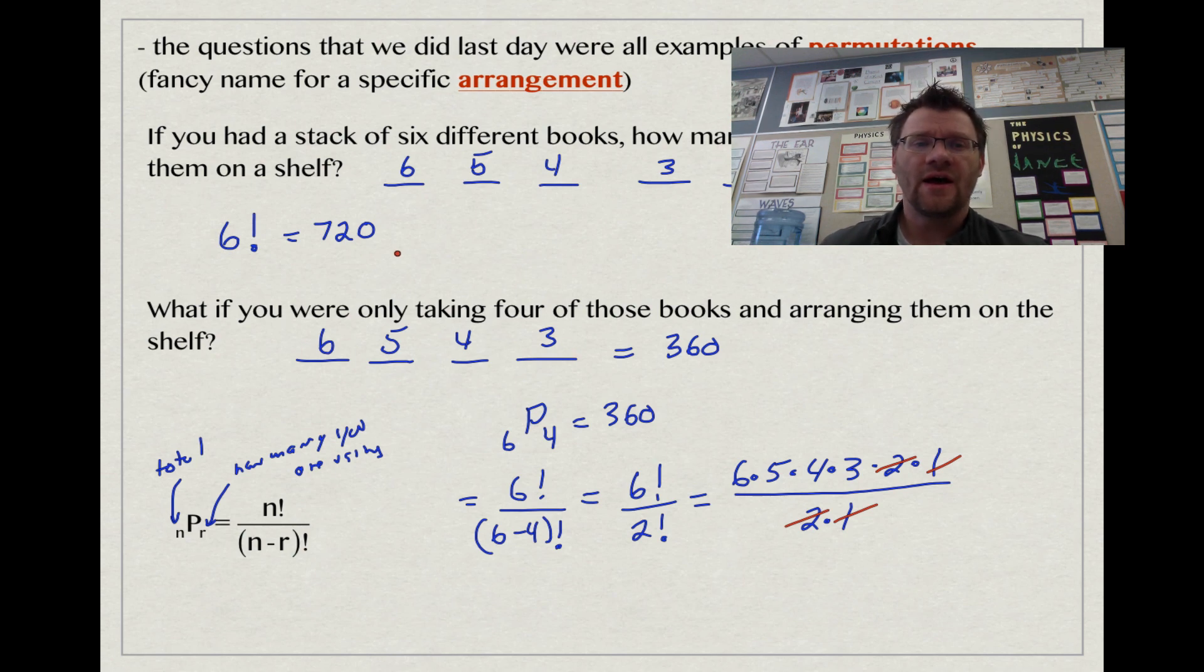A permutation is just a fancier name for a specific arrangement. You could either fill in the blanks, but sometimes that will be too long. So you could use a permutation formula or button on your calculator, and that's going to help you out immensely.